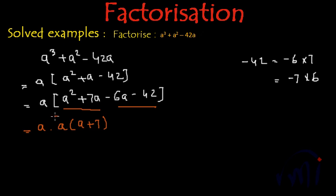And from these two terms I can take -6 common and inside the bracket I will have a + 7.